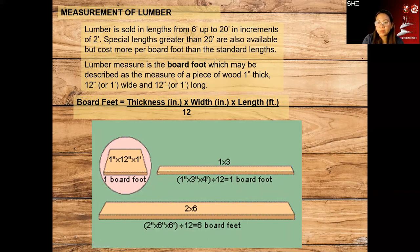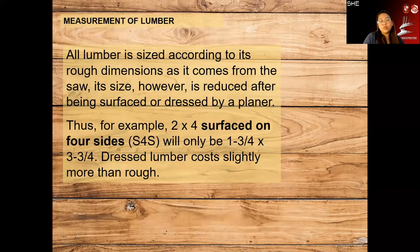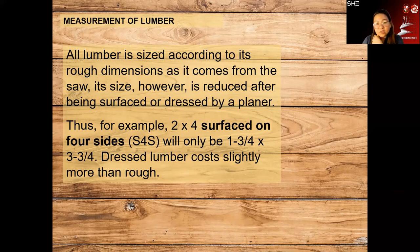That's why we divide by 12 — dimensions are not all the same. When someone asks you to buy lumber, the question will be how many board feet. All lumber is sized according to its rough dimension — not based on the smoothed surface — as it comes from the saw. The size is reduced after being surfaced or dressed by a planer.